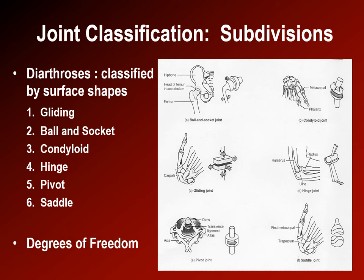Joints have degrees of freedom — that is, how many directions they are able to move in. The maximum is three degrees of rotational freedom: movement in the sagittal, frontal, or transverse planes. Beyond that, joints have various combinations of degrees of rotational or translational freedom.